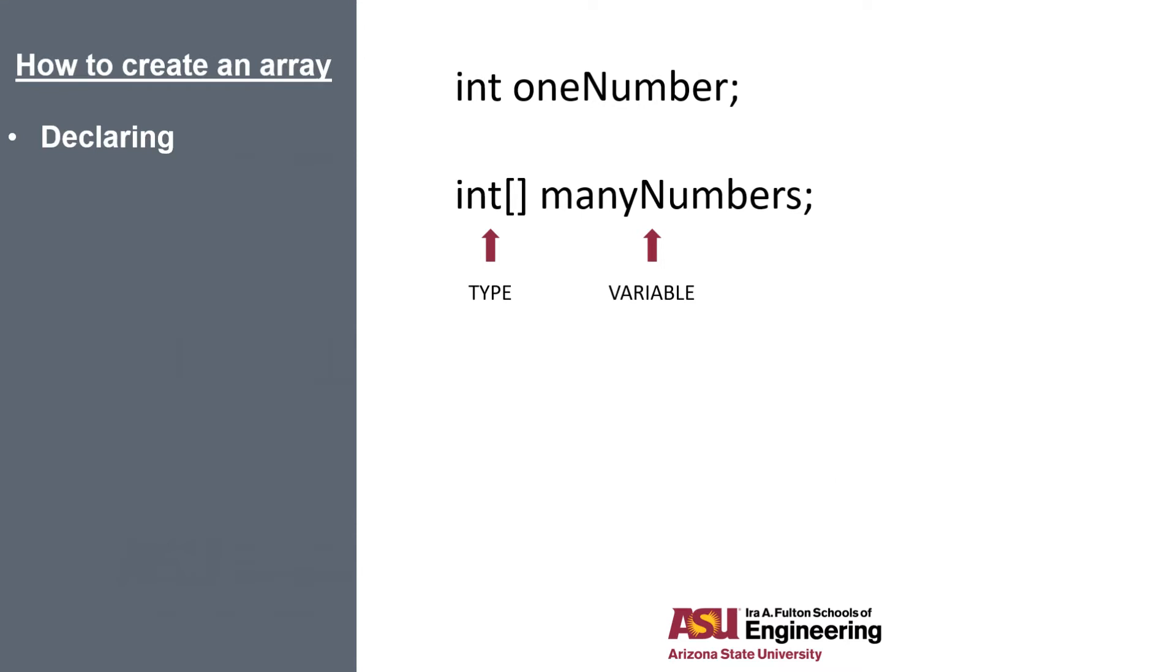So all we do to declare an integer array is add square brackets after the type. You can put your square brackets at the end of the variable like you do in C++, it's just not as conventional in Java. So most people will recommend putting the square brackets after the type.